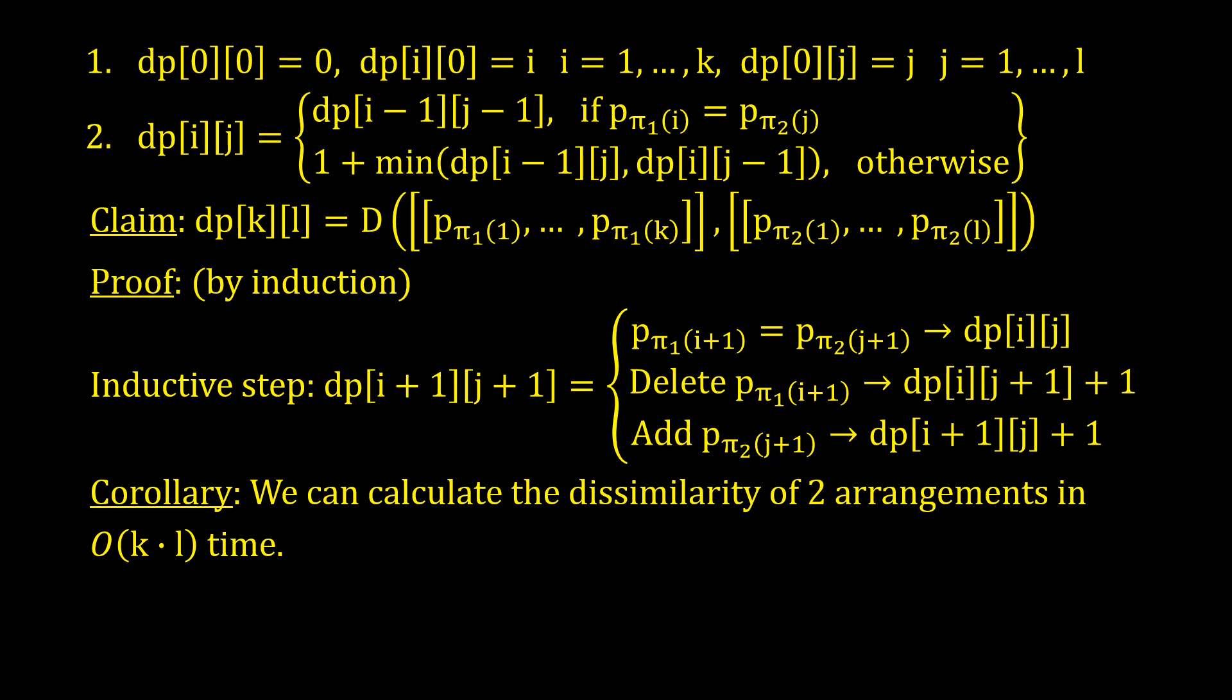Deletion of the last element brings back the problem to dp[i][j+1]. Adding the last element of the second list brings back the problem to dp[i+1][j]. The correct decision is determined by the minimum of these two values.